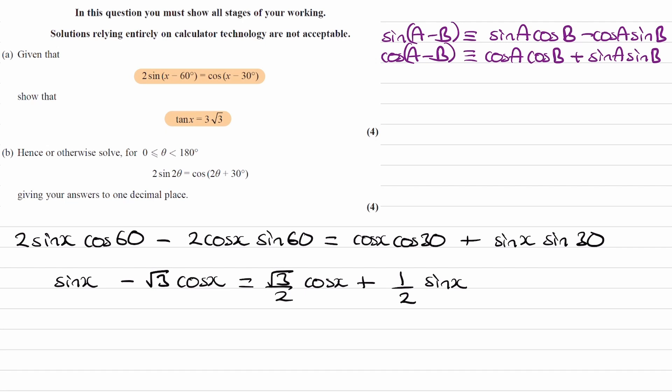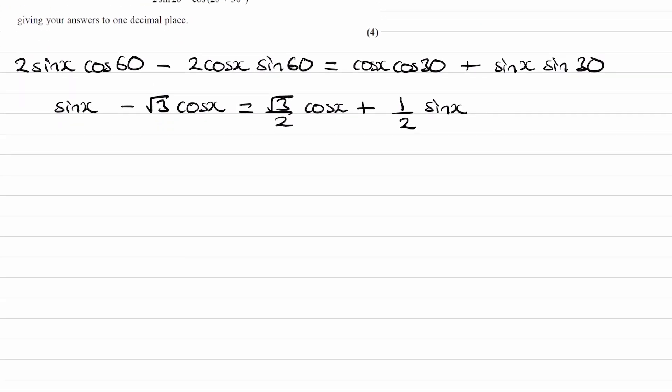Now just to simplify things, I'll multiply everything by 2 so we can get rid of some of these fractions. We then end up with 2 sin x - 2√3 cos x. The halves on this side cancel out.